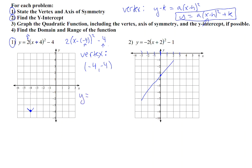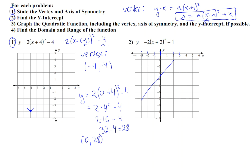So we have y equals 2 times — remember, put 0 in for x — so we're putting a 0 in right here: 0 plus 4 squared minus 4. I just rewrote my equation but substituted 0 for x. Simplifying: 2 times 4 squared minus 4. 4 squared is 16, times 2 minus 4. So we have 32 minus 4, or 28. That tells me I have the point (0, 28) on my graph — when x is 0, y is 28.